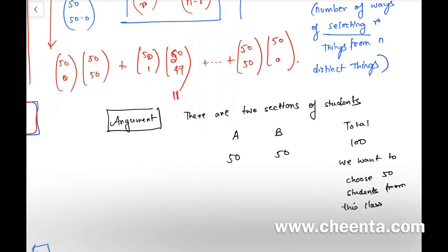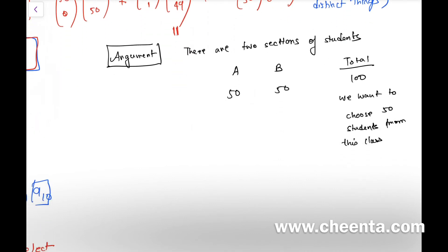Now see, there are really two ways of doing it. You can put all the students together and select (100 choose 50), or you could do this: (50 choose 0)—so choose no student from the first class and all of them from the second class.